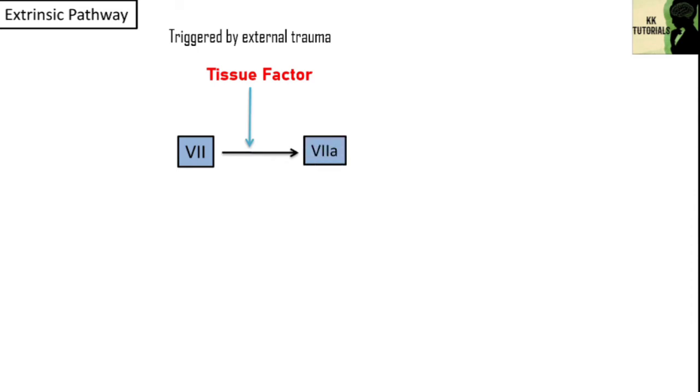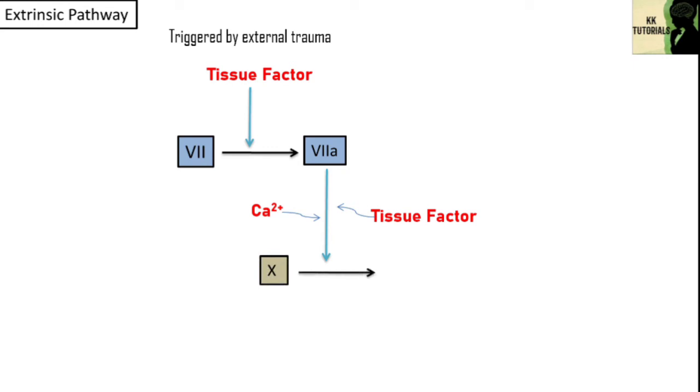The extrinsic pathway is triggered by external trauma. This trauma can be to the vessel wall itself or to the extracellular tissue. This tissue trauma causes the release of tissue factor, also known as tissue thromboplastin. Tissue factor causes conversion of factor 7 to activated factor 7a, and then tissue factor combined with activated factor 7a in the presence of calcium ions causes the conversion of factor 10 to activated factor 10a.